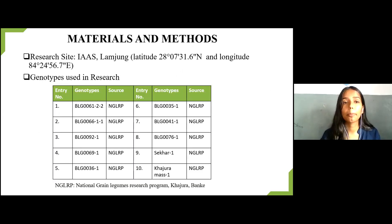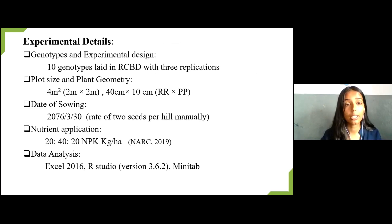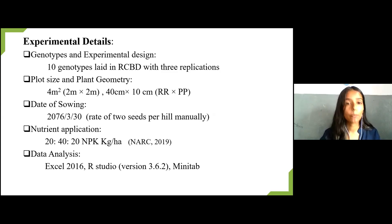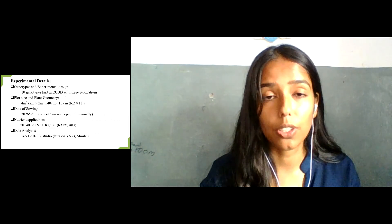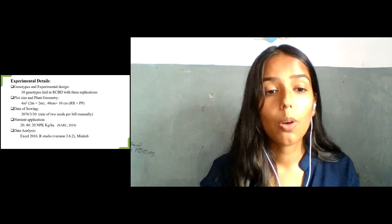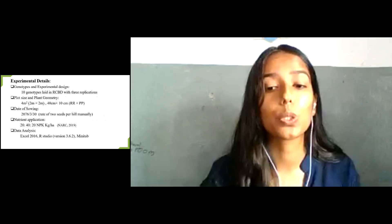The research was conducted in the research field of IAS Lamjung for approximately 4 months, starting from July 15th. Genotypes used in the research were collected from the National Grain Legume Research Program, Khajura Banke. Ten genotypes were laid out in an RCBD with 3 replications. Each experimental plot was 4 square meters with 100 plants, planted with a crop spacing of 40 x 10 cm. The fertilizer application rate was 20:40:20 NPK per hectare as suggested by NARC. Data analysis was done through Excel 2016, RStudio version 3.6.2, and Minitab.